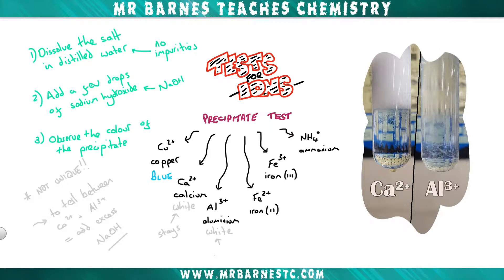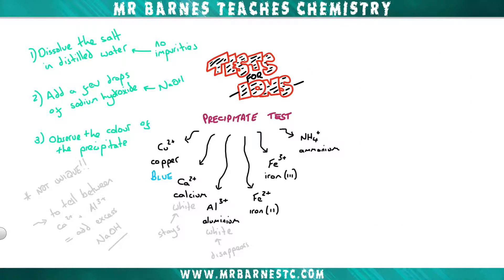But when we do it to aluminium, that white precipitate disappears. It becomes colourless. So that's how you tell the difference between calcium and aluminium. That's really important.